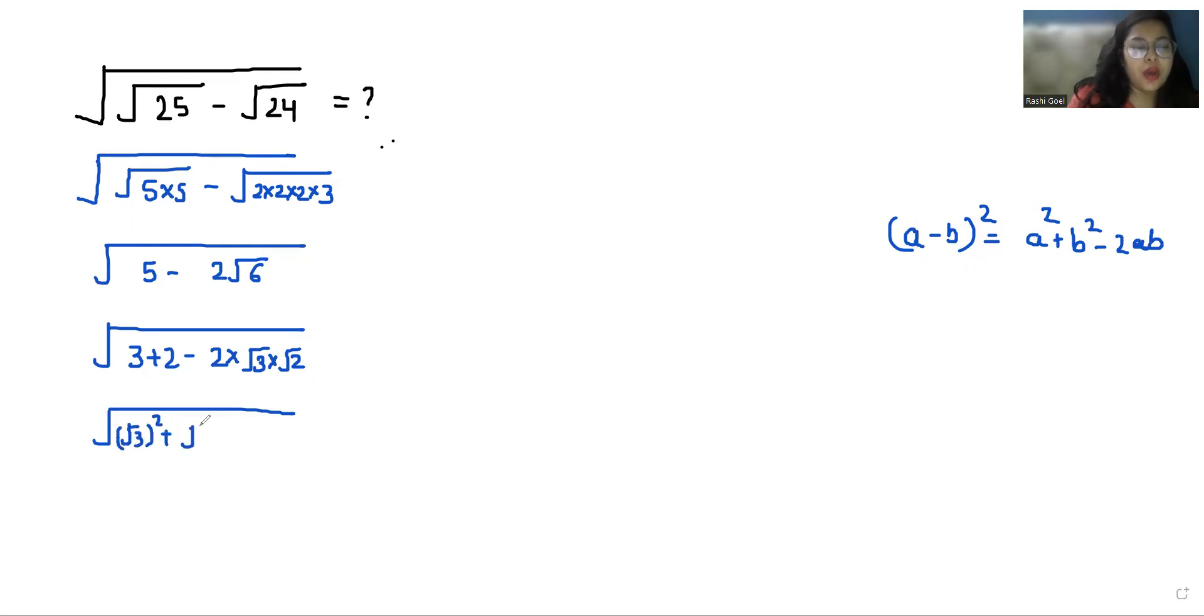Minus 2 times root 3 times root 2. So if we compare this with a formula, it becomes a formula of root 3 minus root 2 whole square.